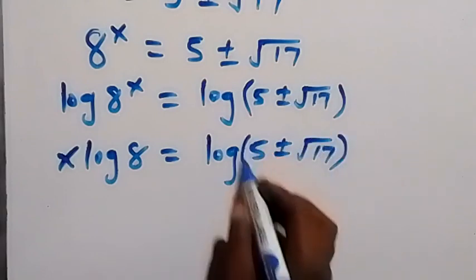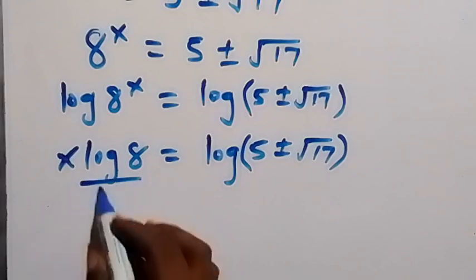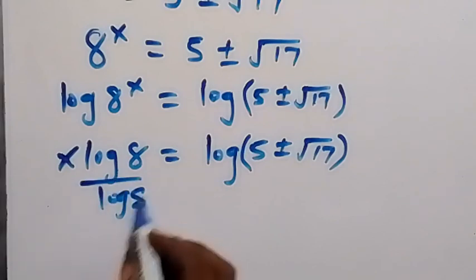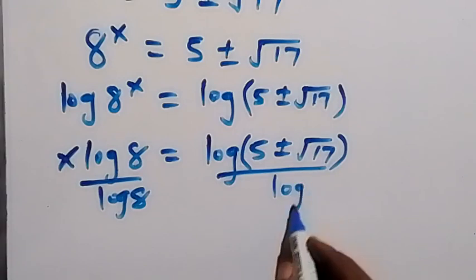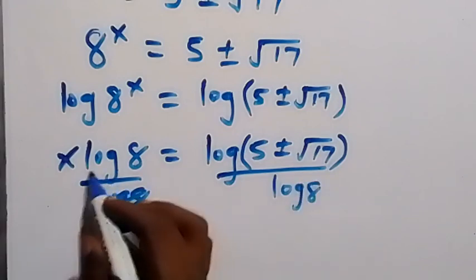And from here we divide both sides by log 8. And from here log 8 cancel each other.